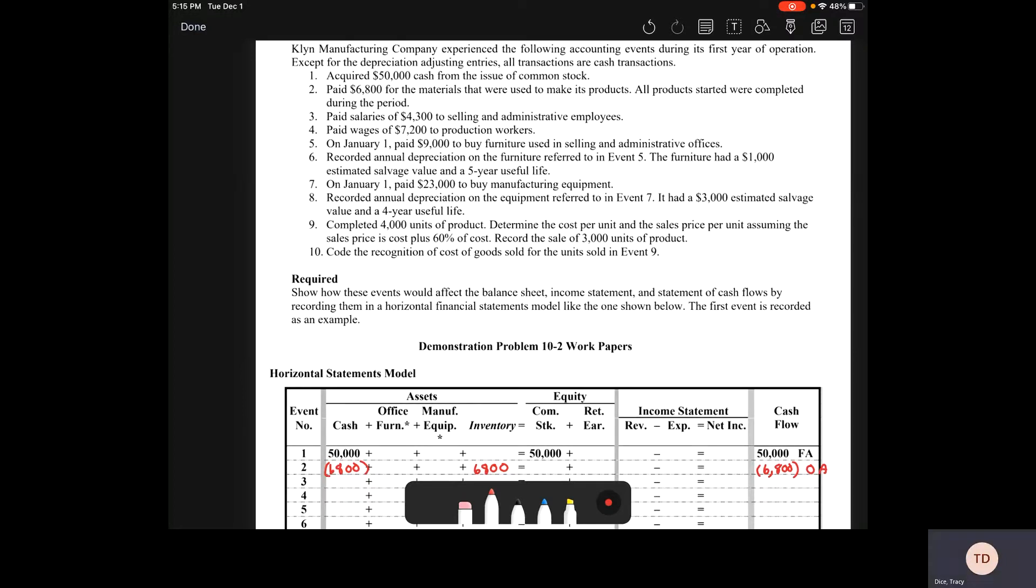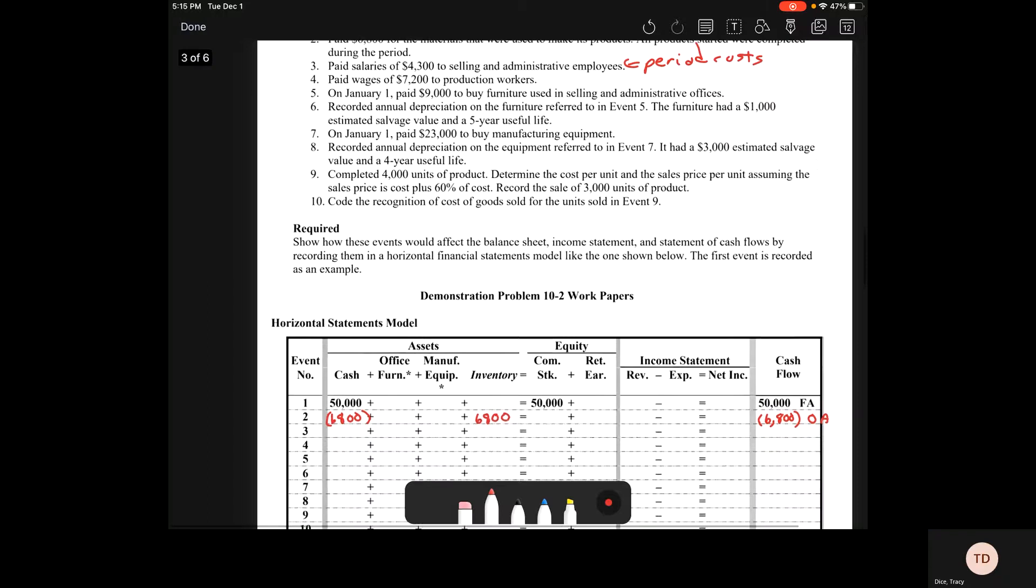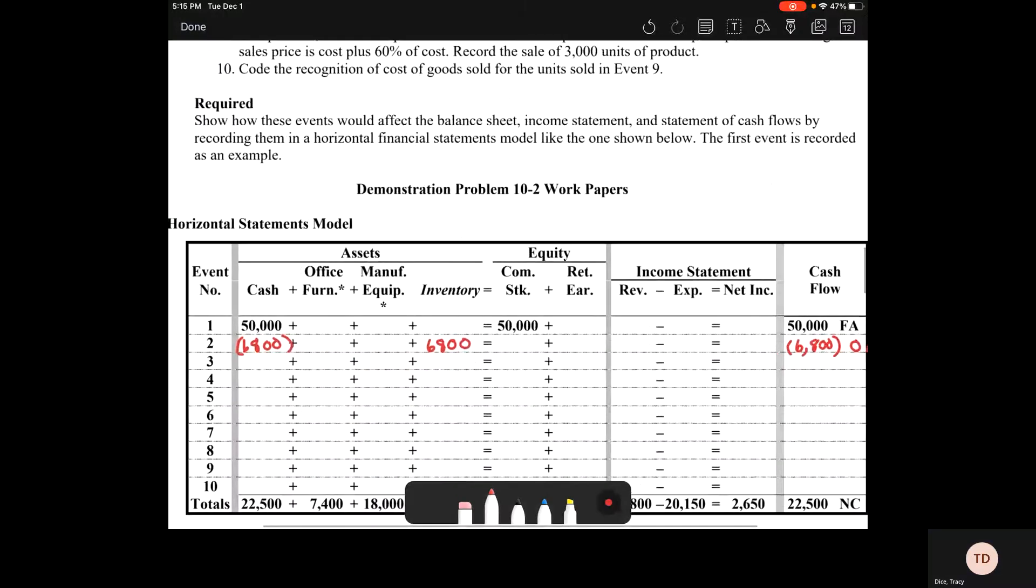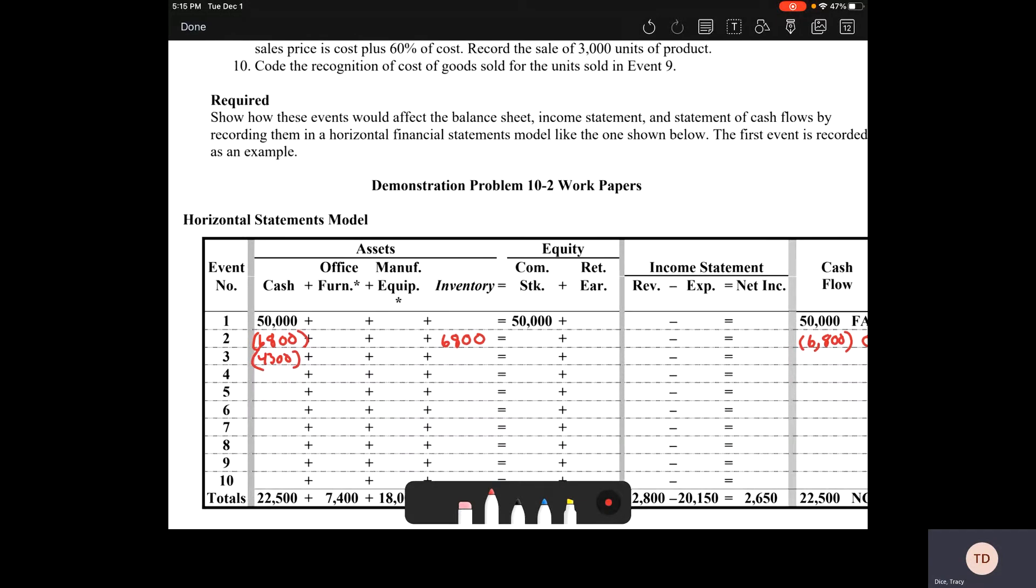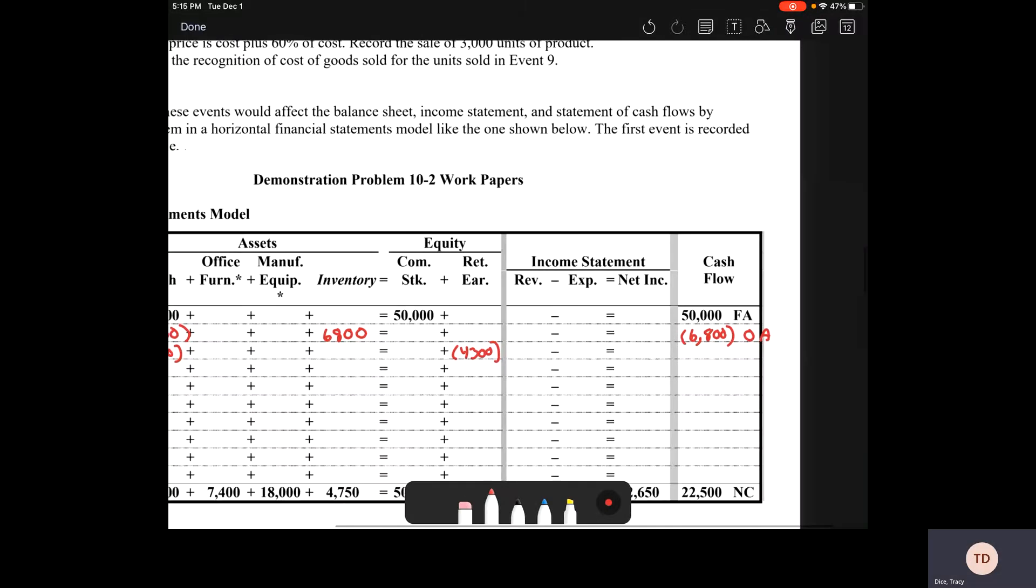Number three, we paid salaries of $4,300 to the selling and administrative employees. Remember, selling and administrative employees are not directly tied to the production of the product, so these are our period costs and an expense right away. We take out $4,300 in cash. Since it's an expense right away, we take it out of our retained earnings. That expense comes out of our cash flow for operating.